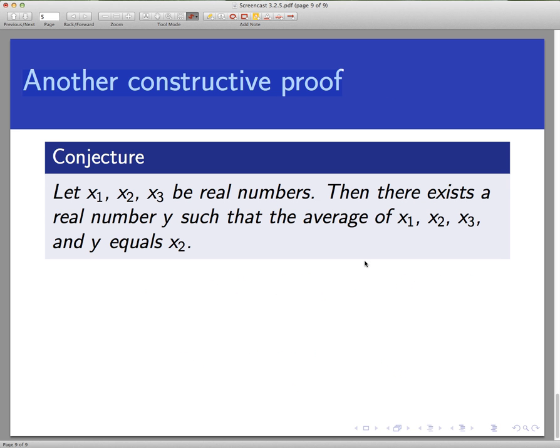So here's another example of a constructive proof. This one involves proving that something exists. This is quite a common usage of a constructive proof. Let x₁, x₂, and x₃ be any three real numbers you like. Then there exists a fourth real number I'm calling y, such that the average of x₁, x₂, x₃, and y equals x₂.